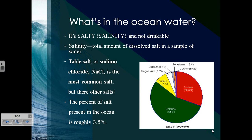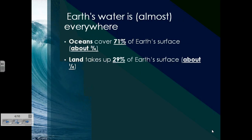The percent of salt present in the ocean altogether is roughly about 3.5%. Now, looking at Earth's water as a whole, the oceans cover 71% of Earth's surface — still a large majority. The land takes up a mere 29% of Earth's surface, or about one-fourth.